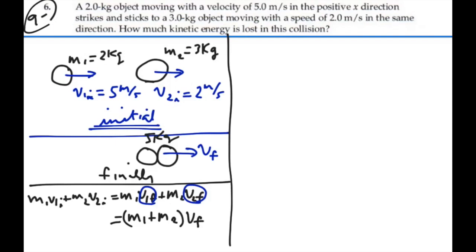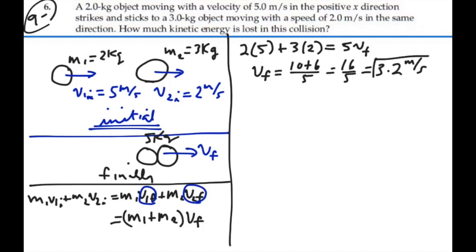Based on our numbers, we have that 2 kilograms times 5 meters per second plus 3 kilograms times 2 meters per second equals 5 kilograms times v final. In other words, v final equals 10 plus 6 divided by 5, 16 divided by 5, or 3.2 meters per second. That is the final velocity of the 2 mass system.